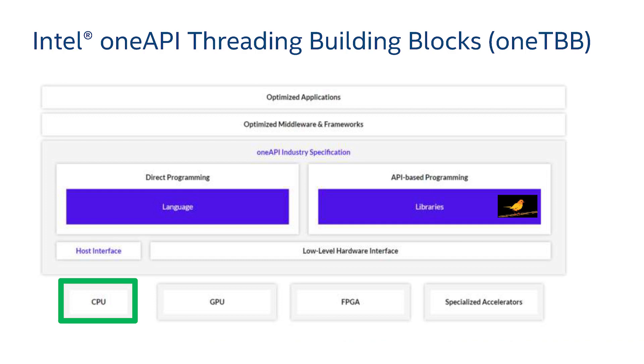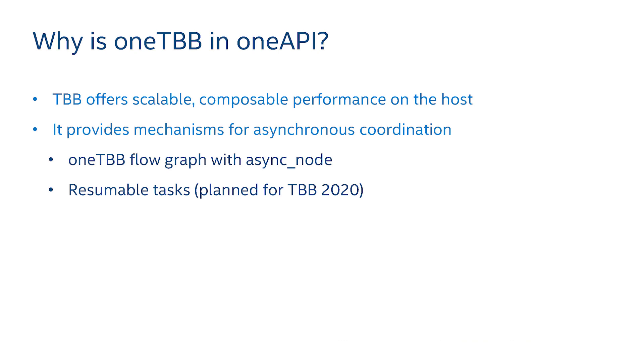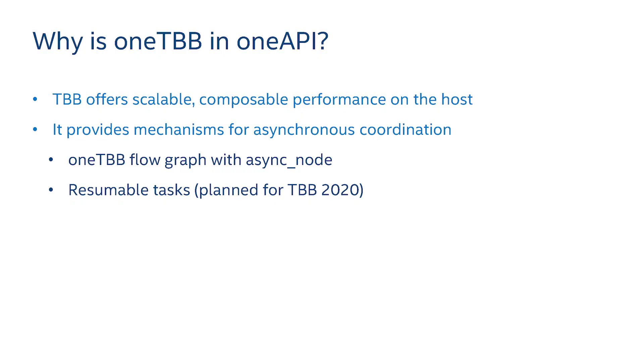If you're doing direct programming using DPC++ and you target the CPU, the threading underneath the CPU device is actually going to be implemented using TBB. This is how we're creating composable, scalable parallelism on the CPU. TBB itself does not execute on accelerators — it executes on the host. But we've also added asynchronous mechanisms in TBB that are good for coordination with things executing on accelerators. If you're using DPC++ directly with accessors and buffers, that's all hidden from you.